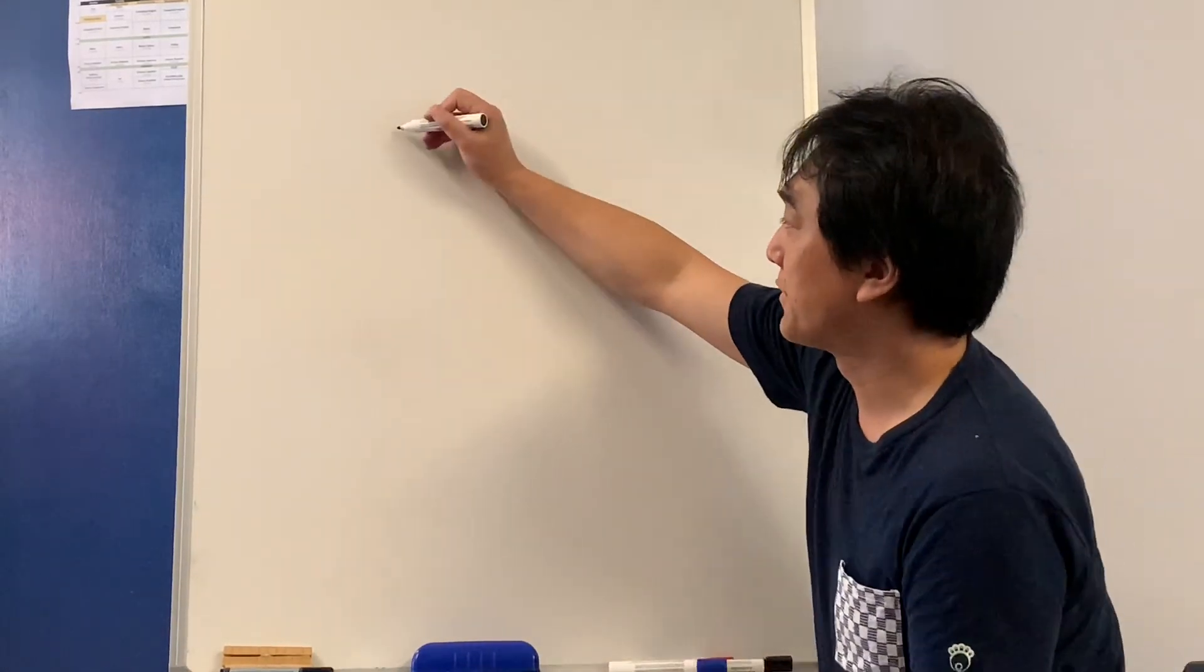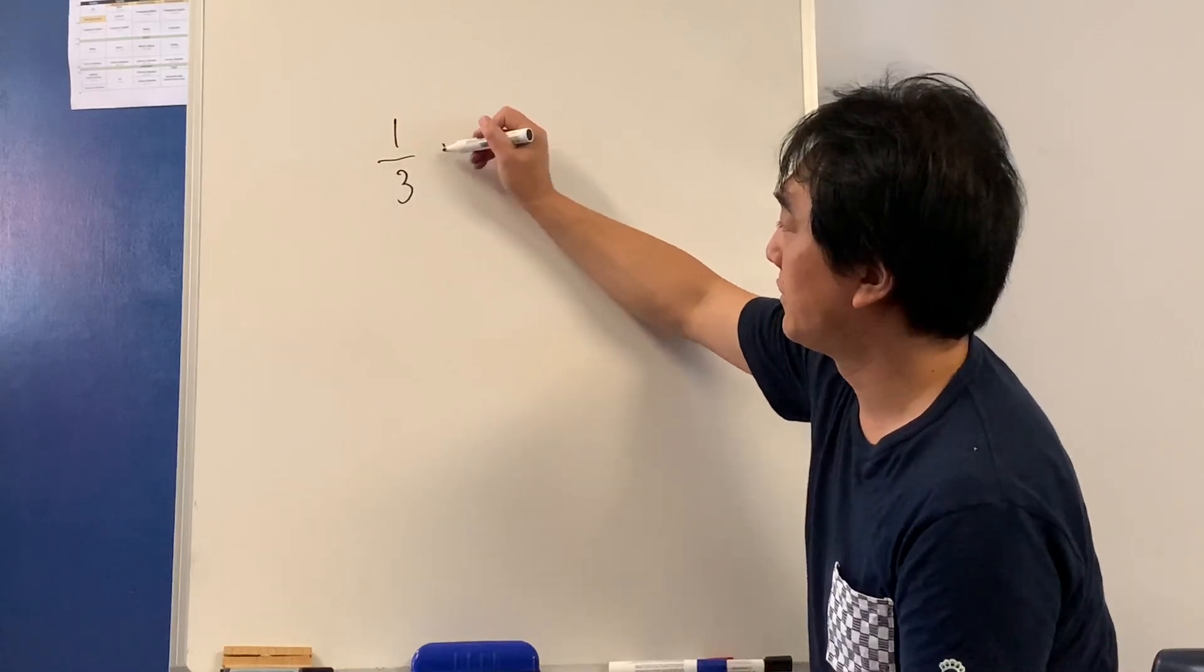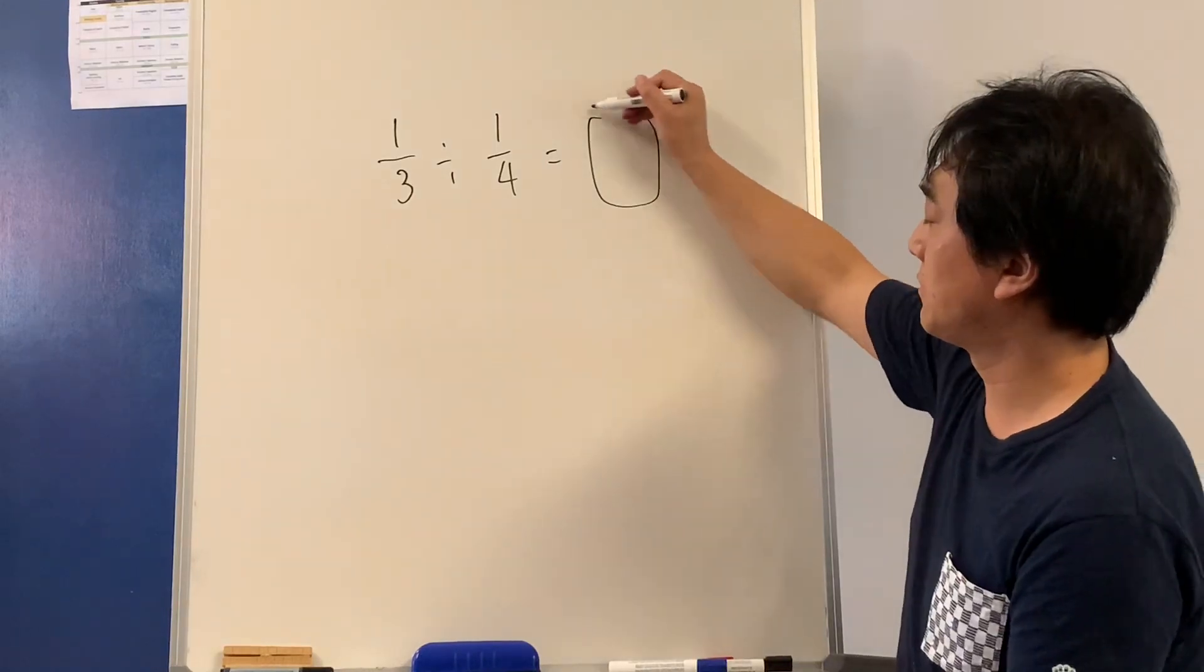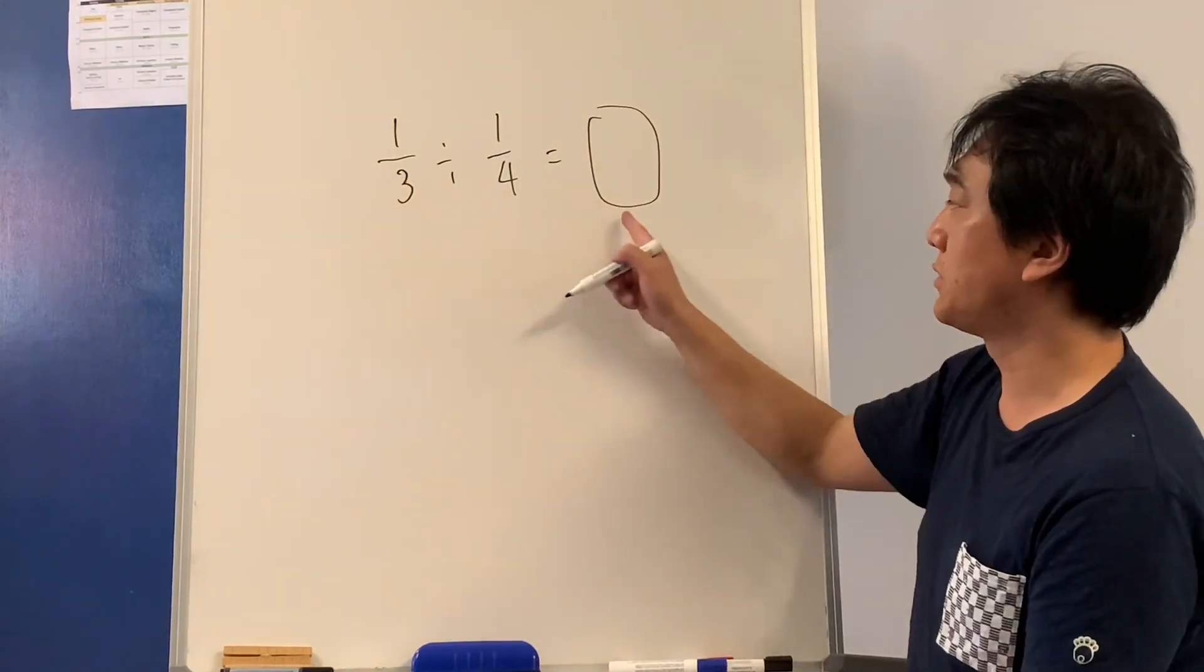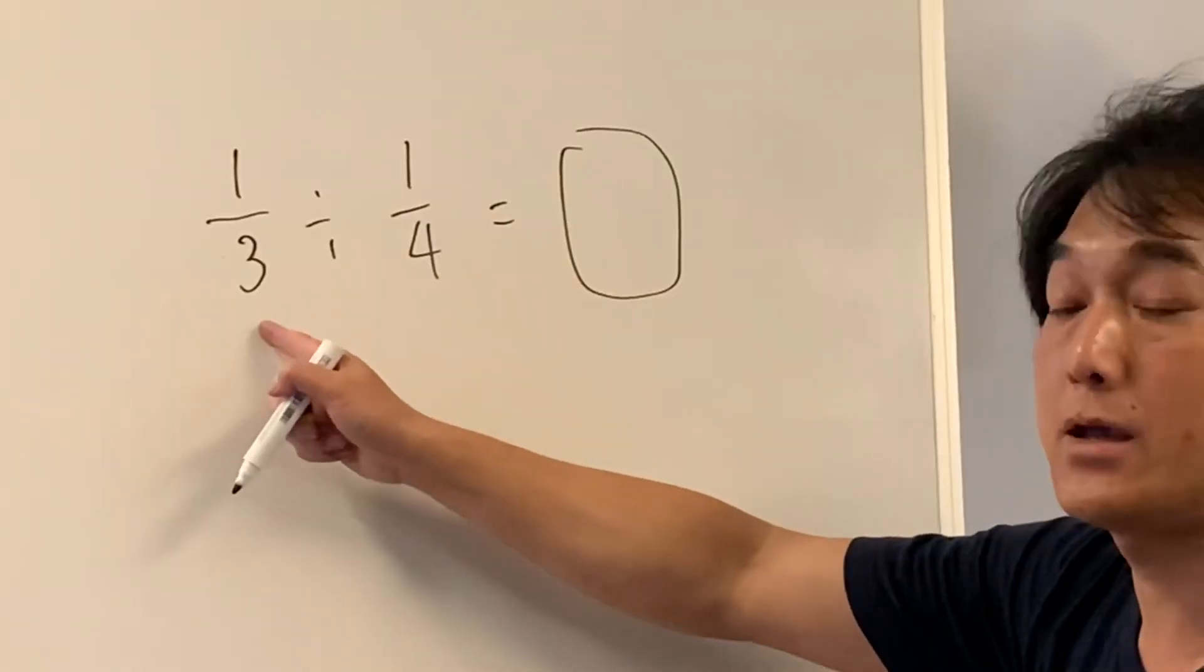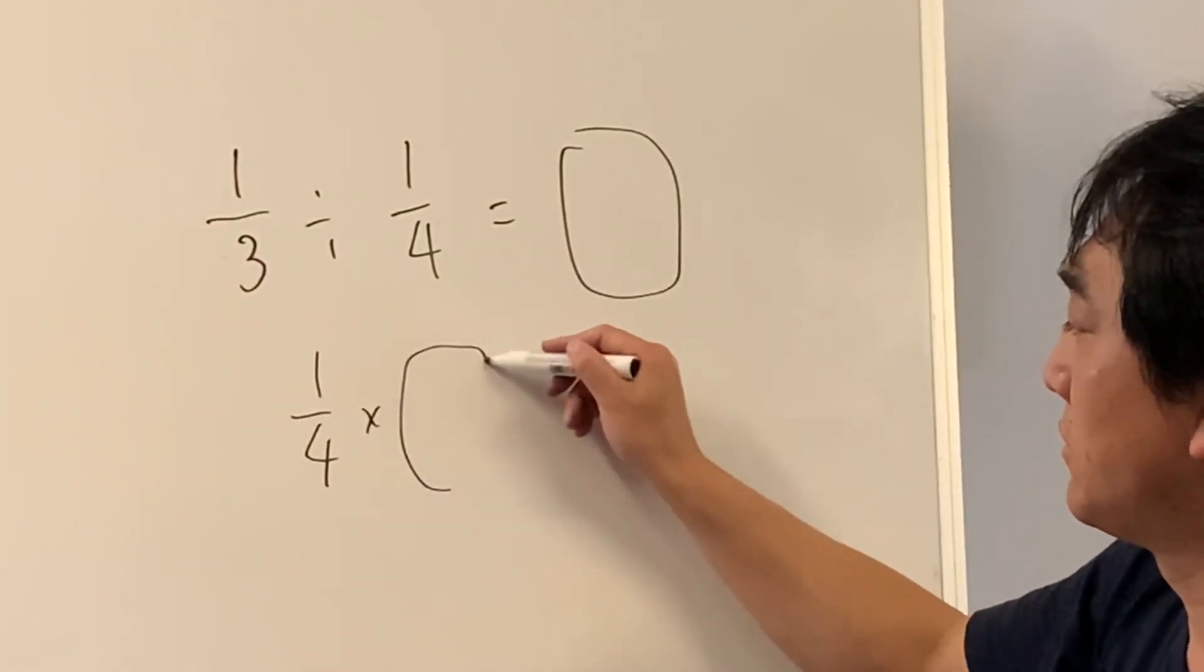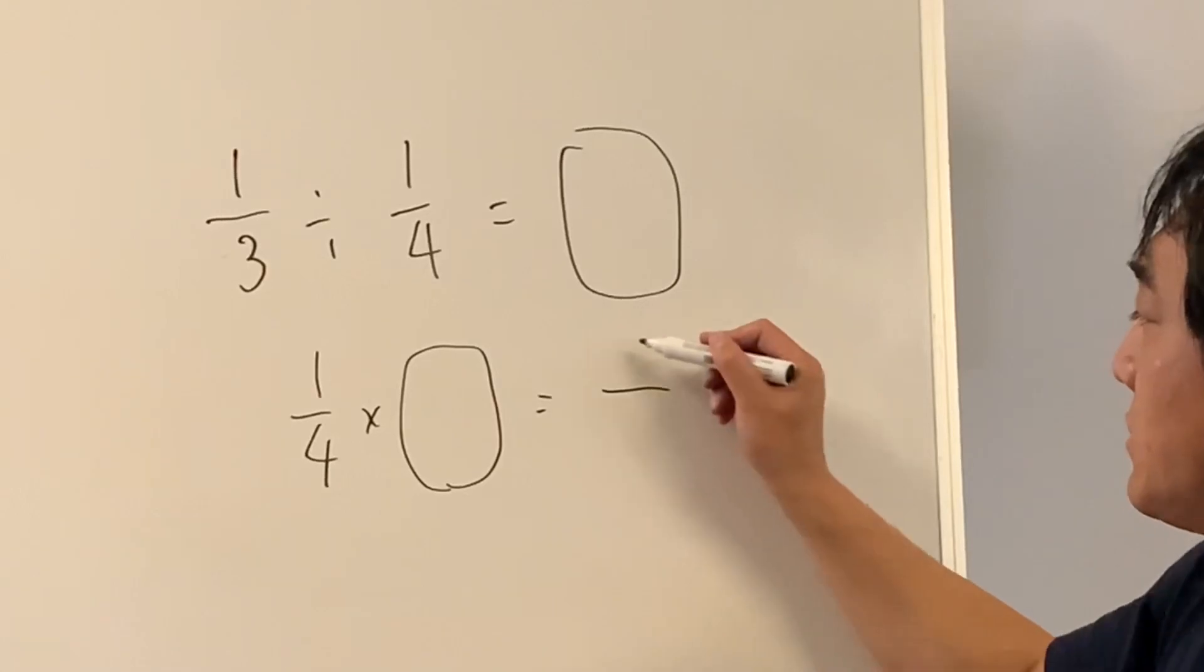So this is the teacher's video. Remember? So one-third divided by one-quarter. If we multiply these two numbers, you get this. So one-quarter times whatever we have is going to be one-third.